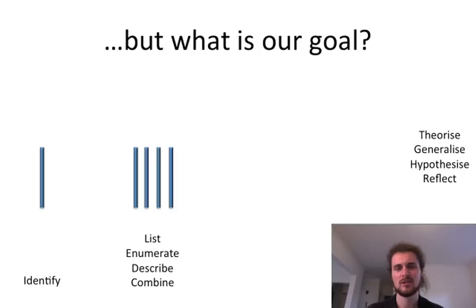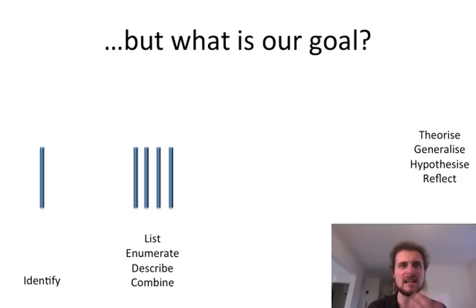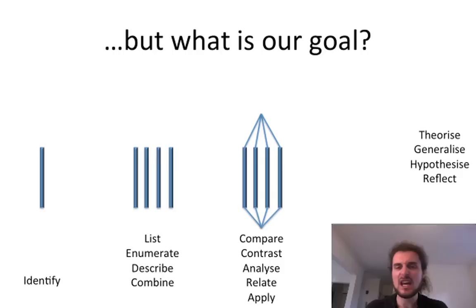As is listing, enumerating, describing, or combining things. Can you tell me all the things that make up a circuit board? Can you write down a list? Can you tell me the components of a balance sheet? Can you describe what a debit is? Those many definition questions at the end of an exam might be these sorts of things: list, enumerate, describe, combine. They're pretty valid goals. You might be seeking to compare, contrast, analyse, relate, or apply things.